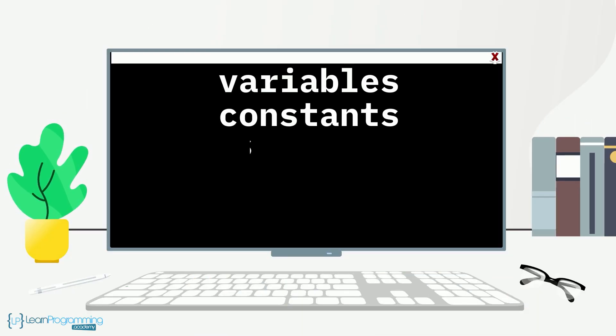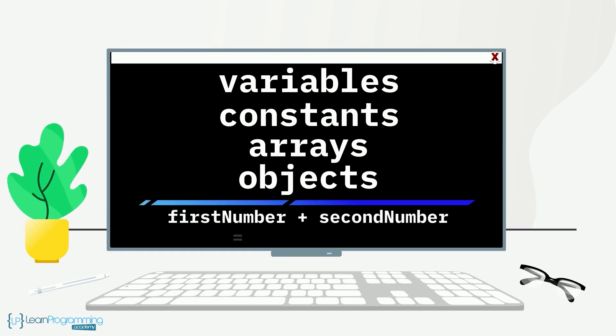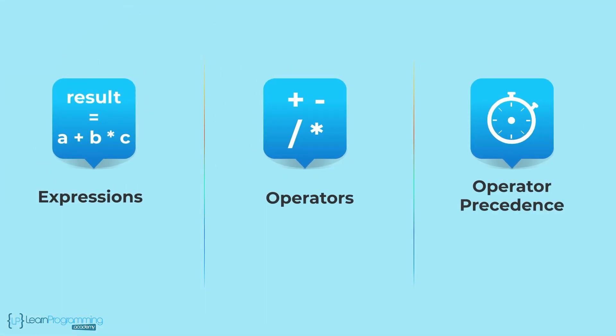Combining variables, constants, arrays, and objects within a program to do something like adding two numbers to produce a result introduces us to the next programming concepts of expressions, operators, and operator precedence.